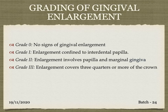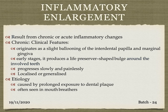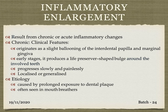We will now see each type of gingival enlargement based on etiology and pathogenesis, starting with inflammatory gingival enlargement. It is the result of chronic or acute inflammatory changes, purely caused by local factors. Chronic inflammatory gingival enlargement originates as a slight ballooning of the interdental papilla and marginal gingiva. In early stages it produces a life-preserver-shaped bulge around the involved tooth, progresses slowly and painlessly, and may be localized or generalized. The etiology is prolonged exposure to dental plaque, often seen in mouth-breathing patients.